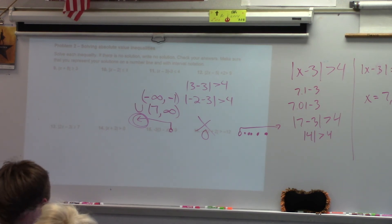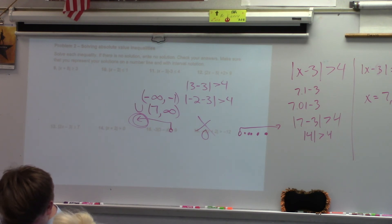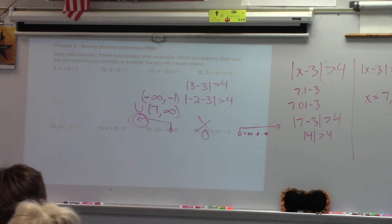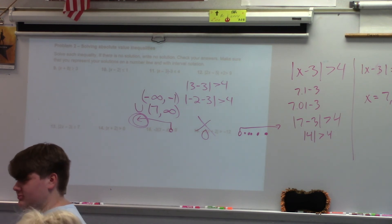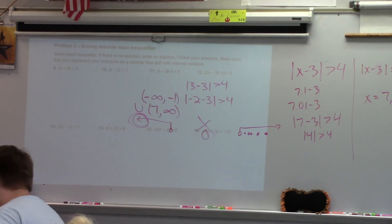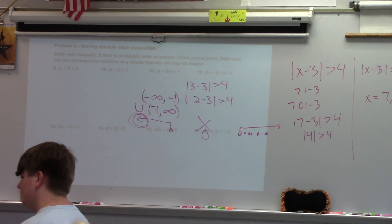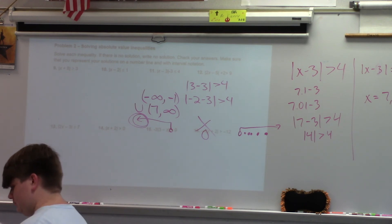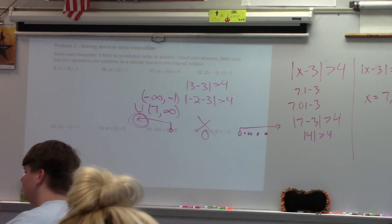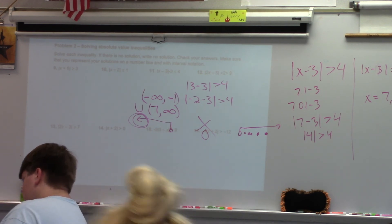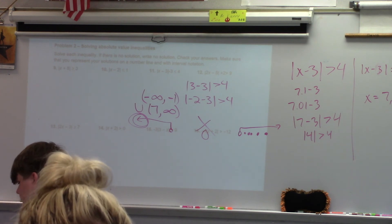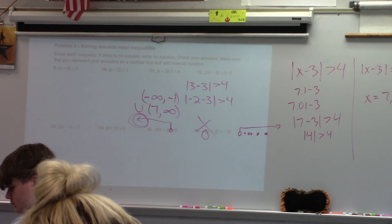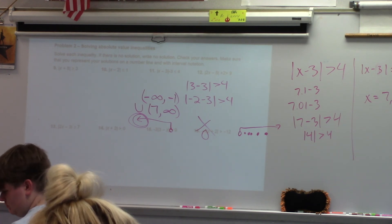The only thing I'll say on number 9 is make sure you put the U between those intervals — negative infinity comma negative 11, U, negative 5 to infinity. Don't forget the number line. You're solving as an equation to find your critical values, but you need the number line to figure out the whole solution set.